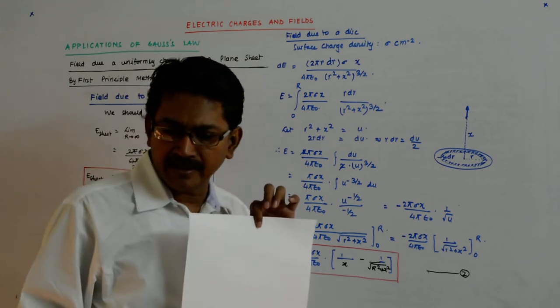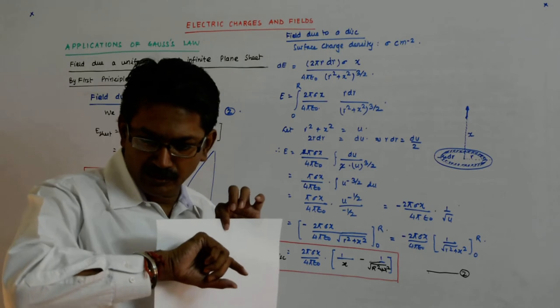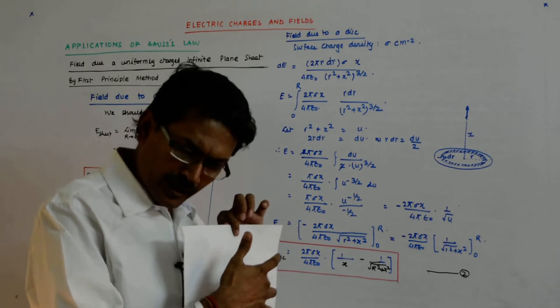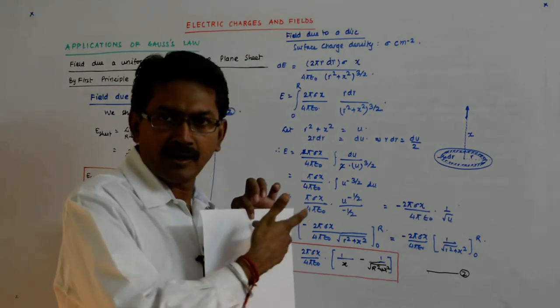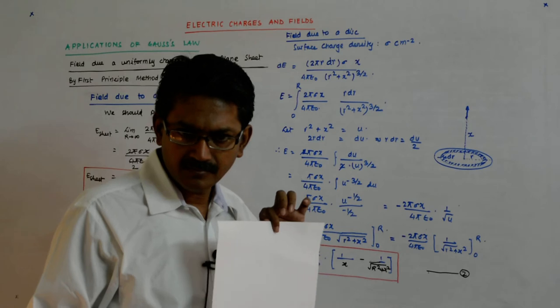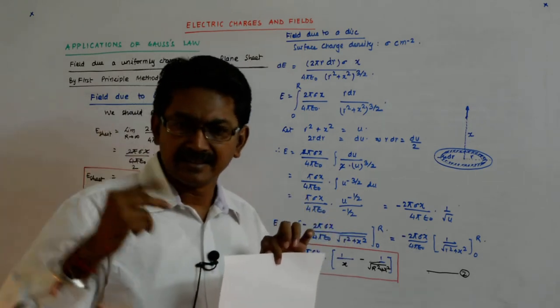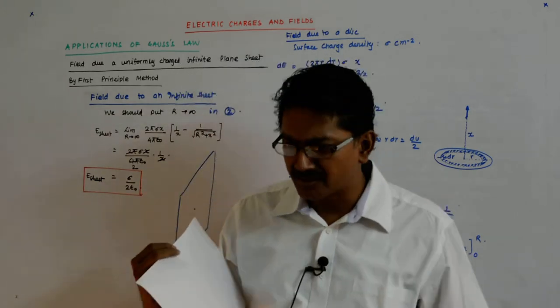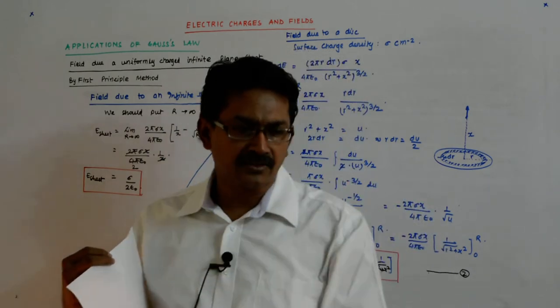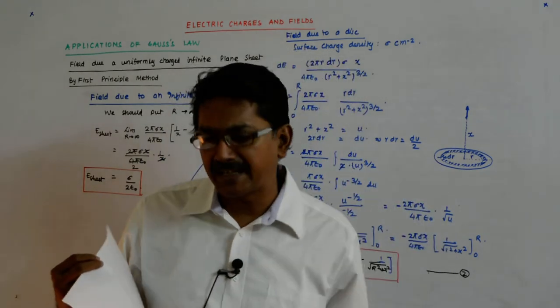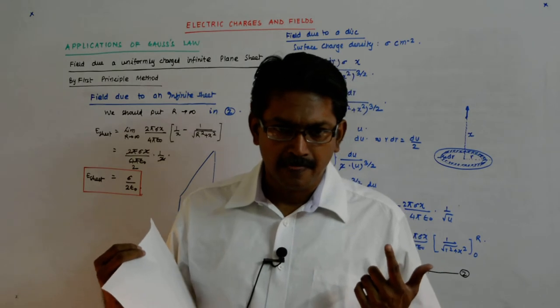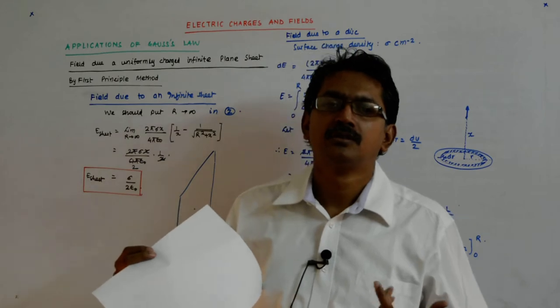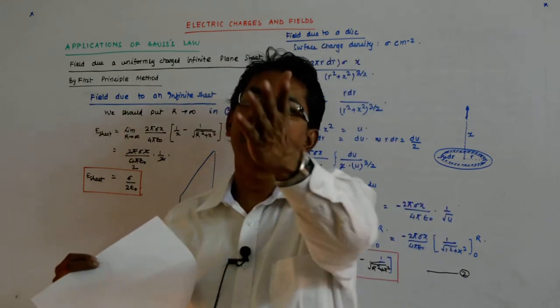They start contributing zero—cos 90, cos 88, cos 89—that will be a very small value. So though you are very close to it, maybe beyond this radius nothing is contributing. They have started already making an angle of 89, 90 degrees. And farther you go, the situation becomes worse in the sense that that angle only increases.